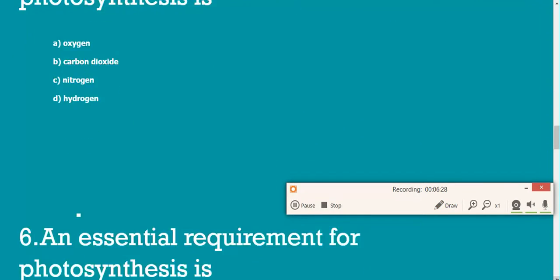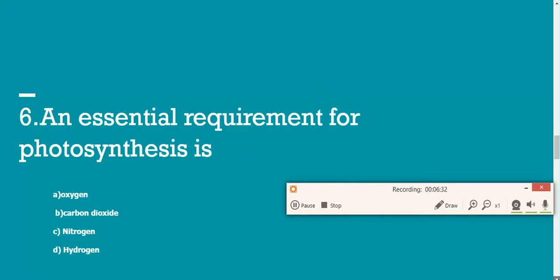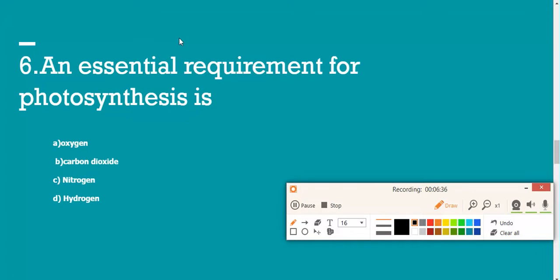We will move on to question number six, which is also on the same lesson. An essential requirement for photosynthesis. What is an essential requirement? We will go through each of the options here. A says oxygen, B carbon dioxide, nitrogen, and hydrogen. What do you need to do photosynthesis? Obviously carbon dioxide, that's a reactant. Oxygen is in the photosynthesis reaction, but on the other side of the arrow, on the product side. So we don't need this to do photosynthesis. Carbon dioxide is a reactant, so we need that. Nitrogen and hydrogen are not involved.